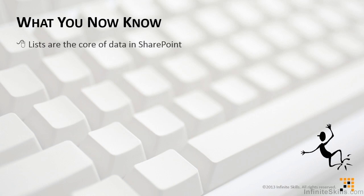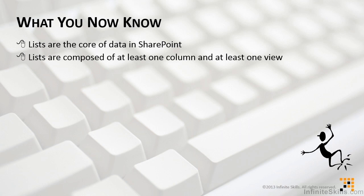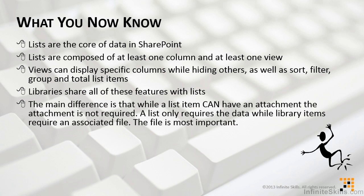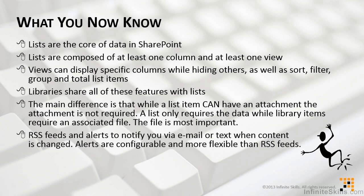What you now know is that lists are the core of data in SharePoint. Lists are composed of at least one column and at least one view. Views can display specific columns while hiding others, as well as sort, filter, group, and total list items. Libraries share all of these features with lists. The main difference is that while a list item can have an attachment, the attachment is not required — a list only requires the data, the columns of information — while library items require an associated file. For library items, the file is the most important part of the entry. We know that RSS feeds and alerts notify us via email or text when content is changed in SharePoint. Alerts are configurable and more flexible than RSS feeds.